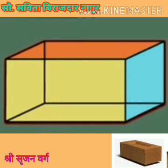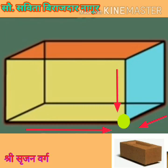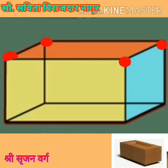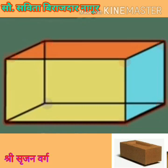Now look at the corners of the brick — the points where two or more edges meet. Here, three edges are meeting at one point. This point is the corner of the brick. Let's count all corners of the brick: 1, 2, 3, 4, 5, 6, 7, 8. We can't see the 8th corner from the front view. It means the brick has 8 corners.